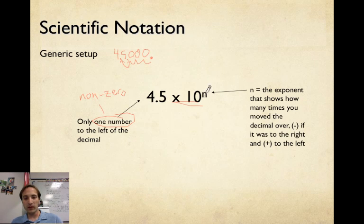So we do times 10 to the n. And what the n does, this is a number that's going to show how many times you have moved the decimal over. So in this case, we moved it one, two, three, four spots. So we're going to change n to four. Now, we moved it to the left. Well, if you move the decimal to the right, this exponent has to be negative. But since we moved it to the left, this exponent is going to be positive.